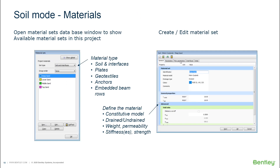The most important thing is the constitutive models we have in order to simulate the behavior of the actual soil or rock. Materials is another icon on the side toolbar — by clicking on it, you get a pop-up window with the material sets you have already defined. If you have none, it will be empty, but it is very easy to create one. This window stores materials for all available objects: not only soil, but also interfaces, plates, geogrids, anchors, and embedded beams. All material information is stored in one place so you can easily find it.